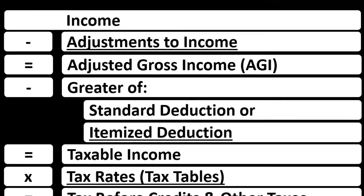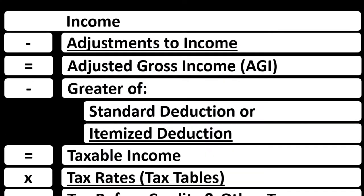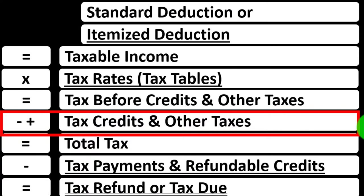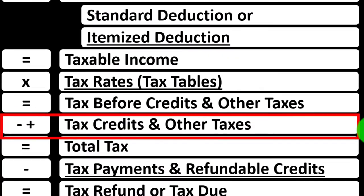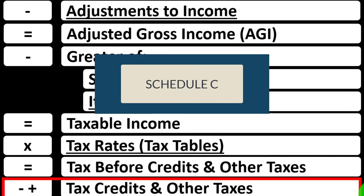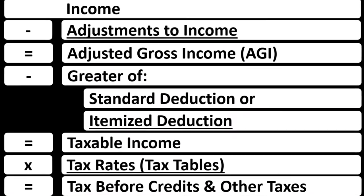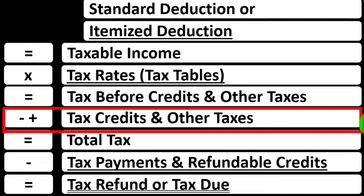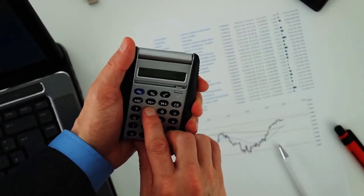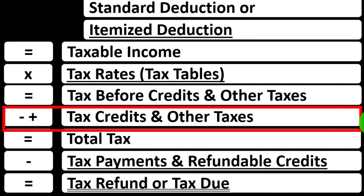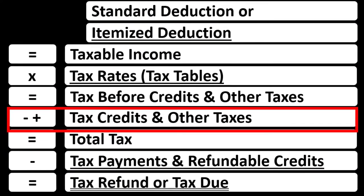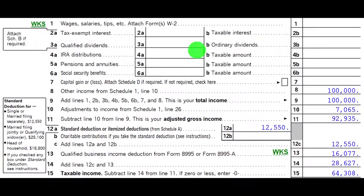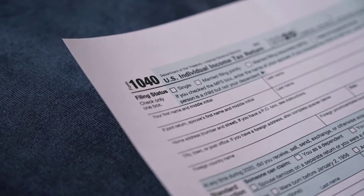Specifically, we're talking about the self-employment tax, which is most likely applied to something like a Schedule C type of business for a sole proprietorship. The Schedule C is reported on a separate schedule — basically an income statement. The net of which we would be calculating the self-employment tax, and that net also flows into line one income up top on the first page of Form 1040.